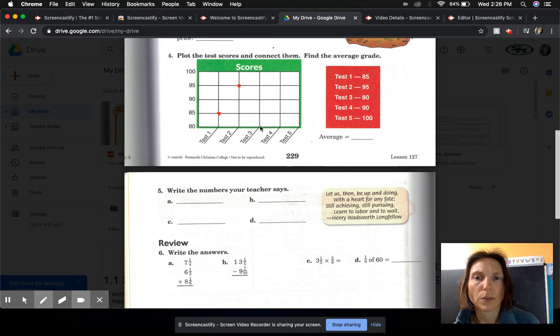Go to test three, and we're going to put a point at 80. Test four, and a point at 90. And then all the way to test five and put a point at 100. And now we're going to draw a line to connect our points.